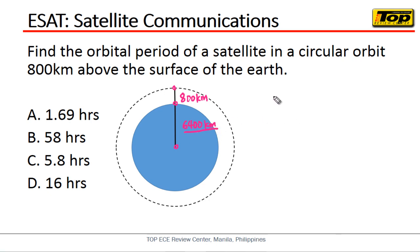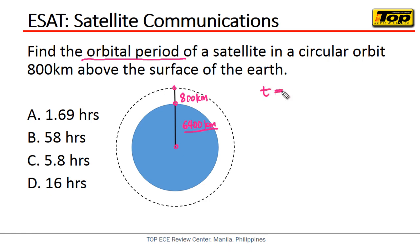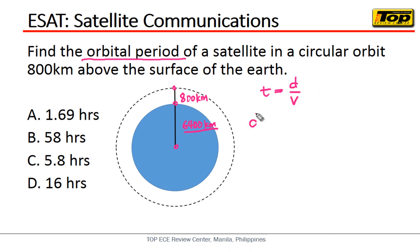From the center up to the surface is the radius of the Earth, which is approximately 6,400 kilometers. Now, how are we going to solve for the orbital period? Period is about time, and time is distance over velocity. The distance the satellite travels is the circumference of its orbit.